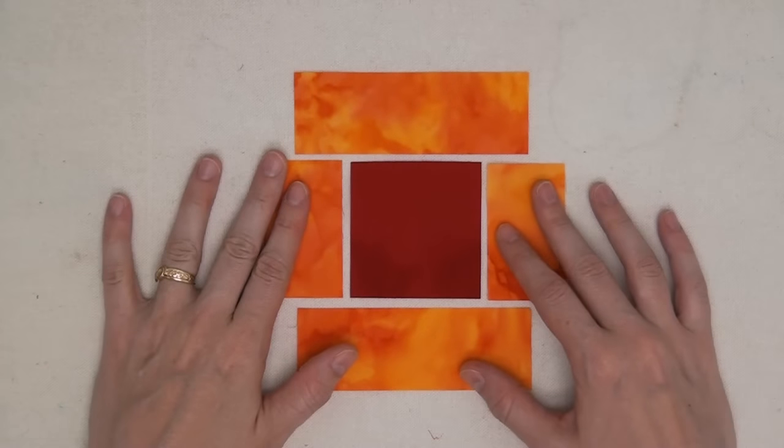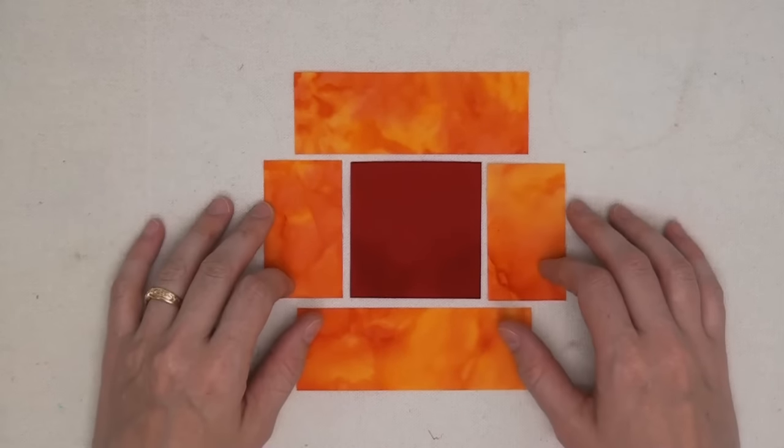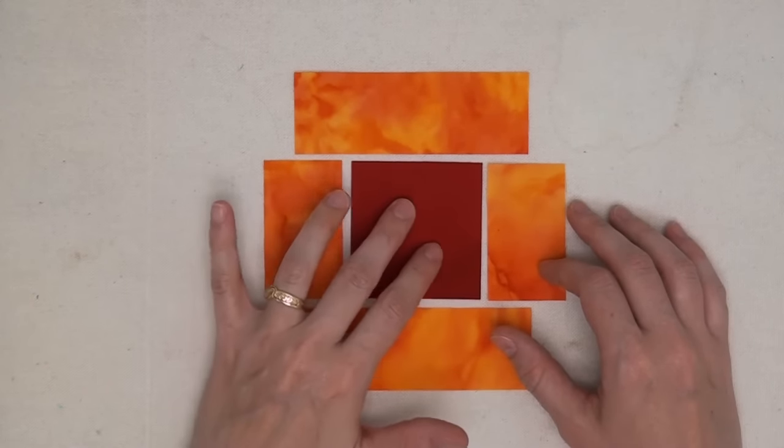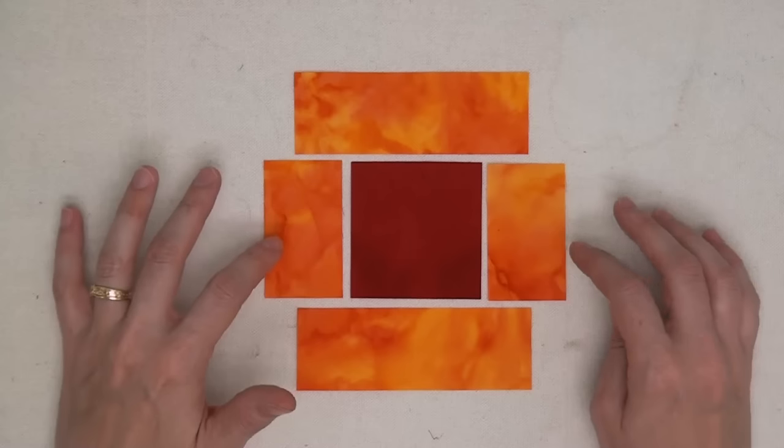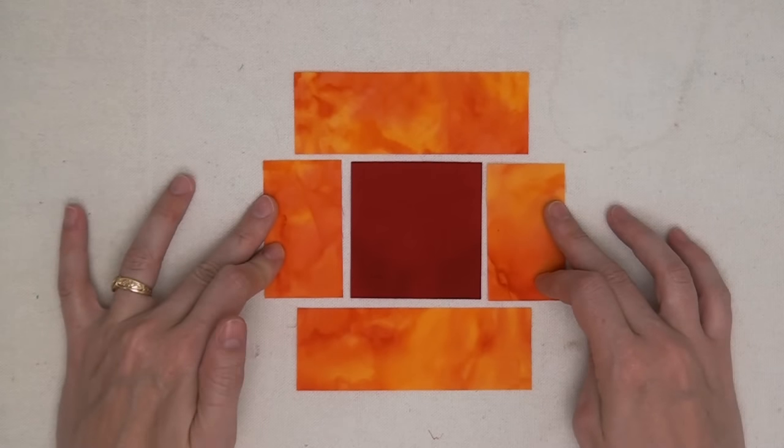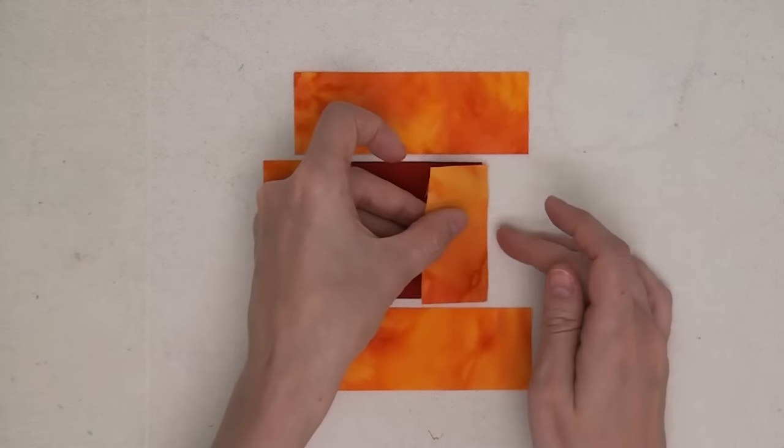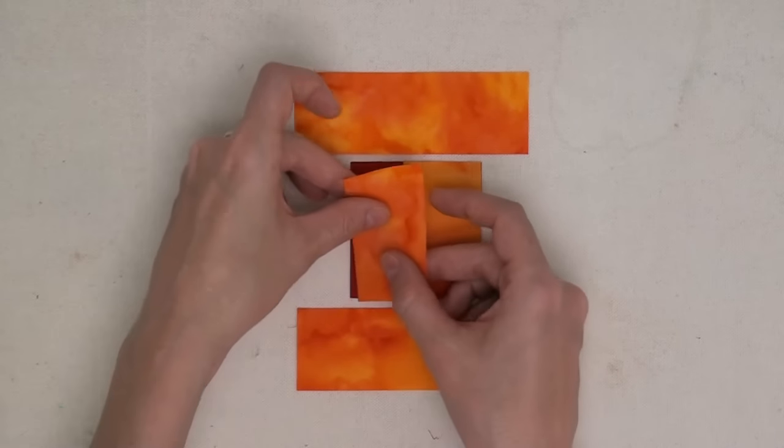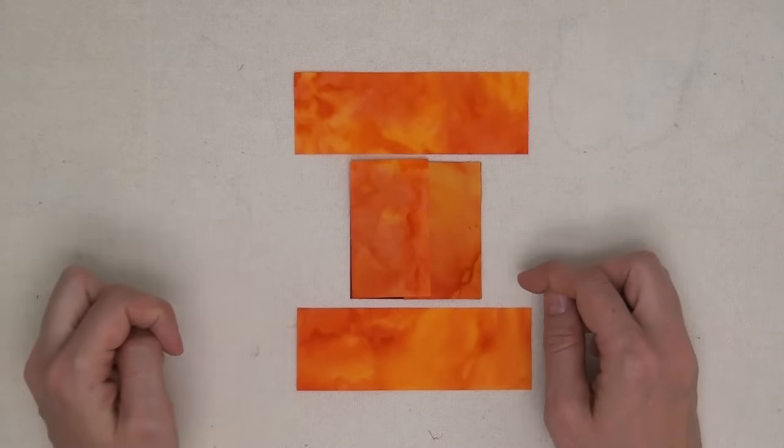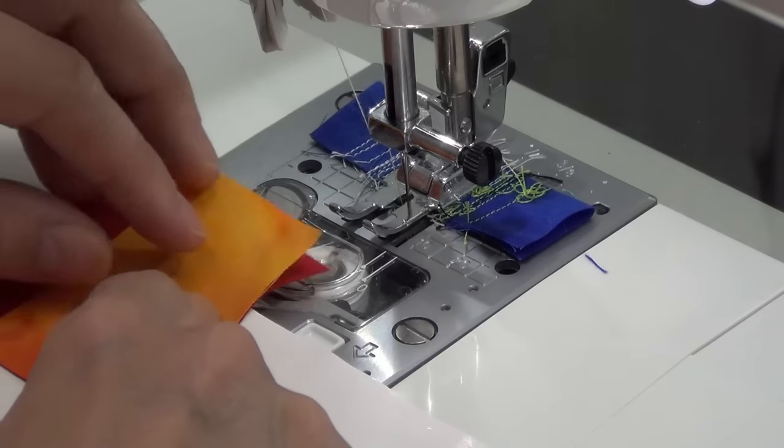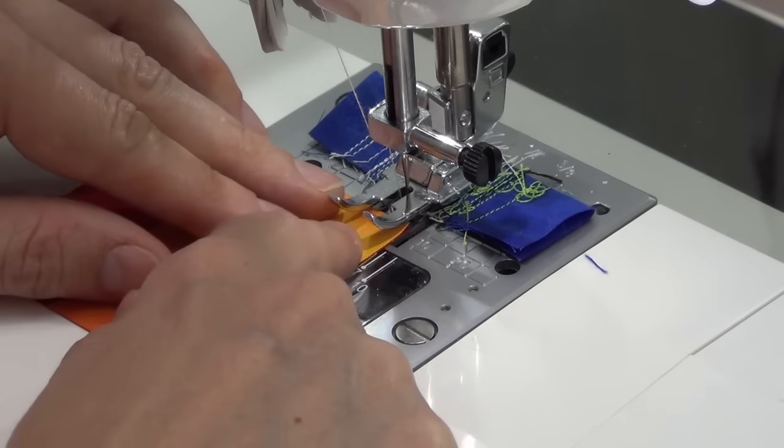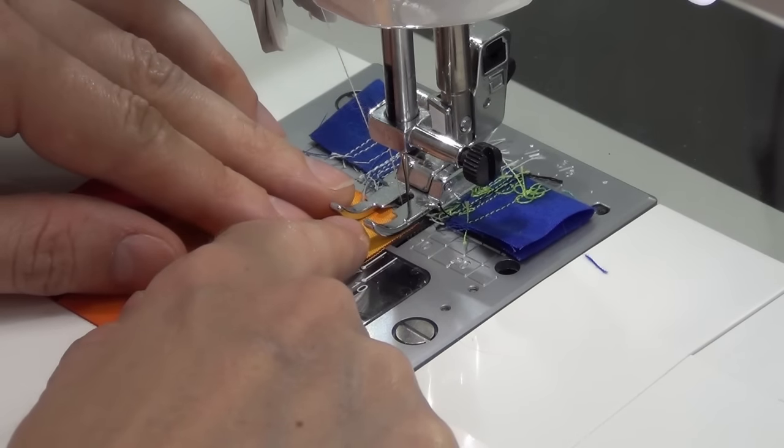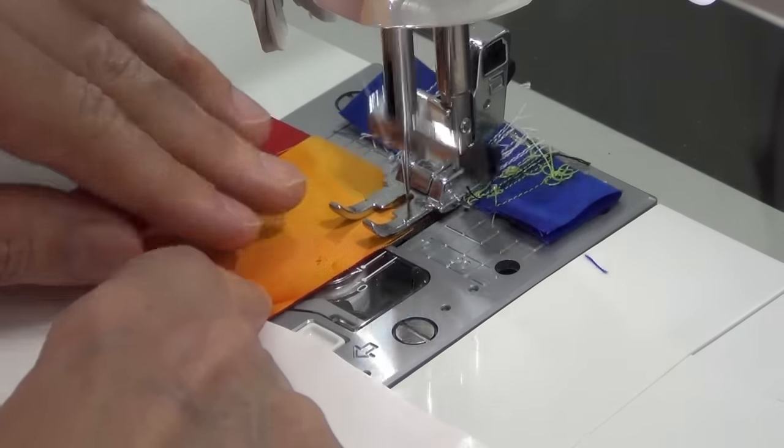So let's get started first with our log cabin block. This is super easy piecing. We're going to begin with a fabric A square in the center and two shorter fabric B rectangles. I'm going to flip these over so they're right sides together. We're going to take it to the machine and just stitch right along these sides to start the piecing.